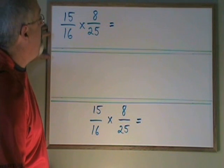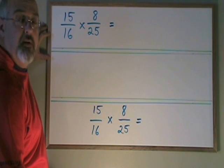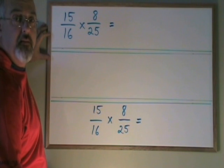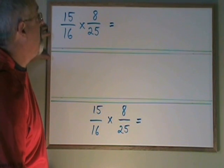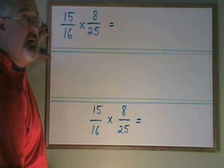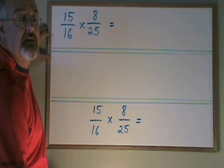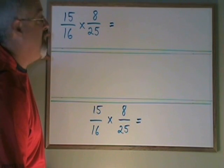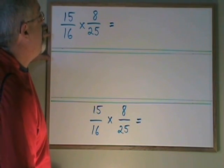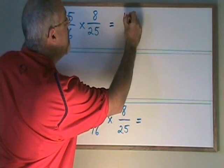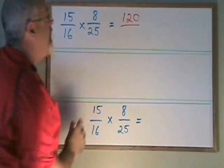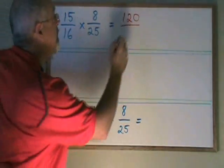We can solve this by multiplying the top by the top and the bottom by the bottom in the way we usually do when we multiply fractions. The numbers are rather large and that can make it a little confusing and a little easier to make mistakes. But if we're careful, we'll get the right answer. 15 times 8 is equal to 120, and 16 times 25 is equal to 400.